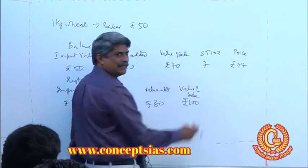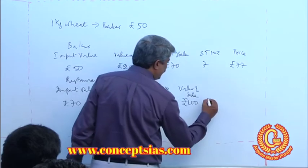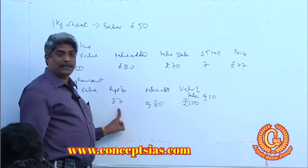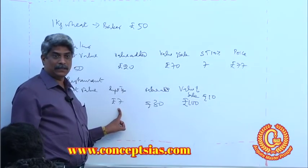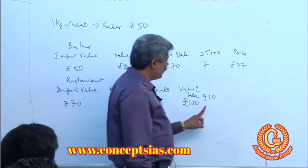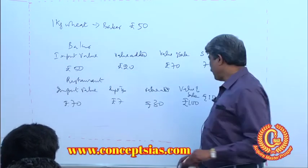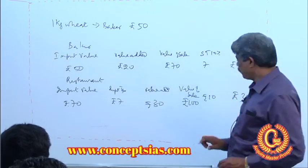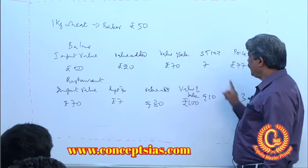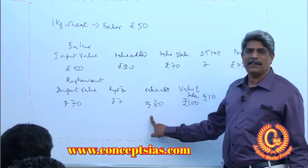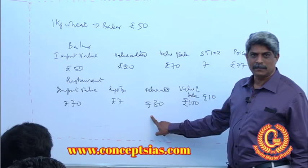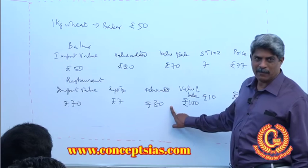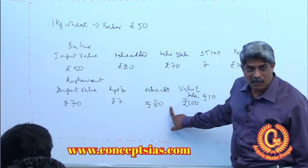There is a 10 percent sales tax, which means the tax he has to pay is 10 rupees. But he has already paid 7 rupees. So he will reduce that 7 and pay a tax of only 3 rupees. This 3 is 10 percent of the value added by him — and that is why it is called value added tax.